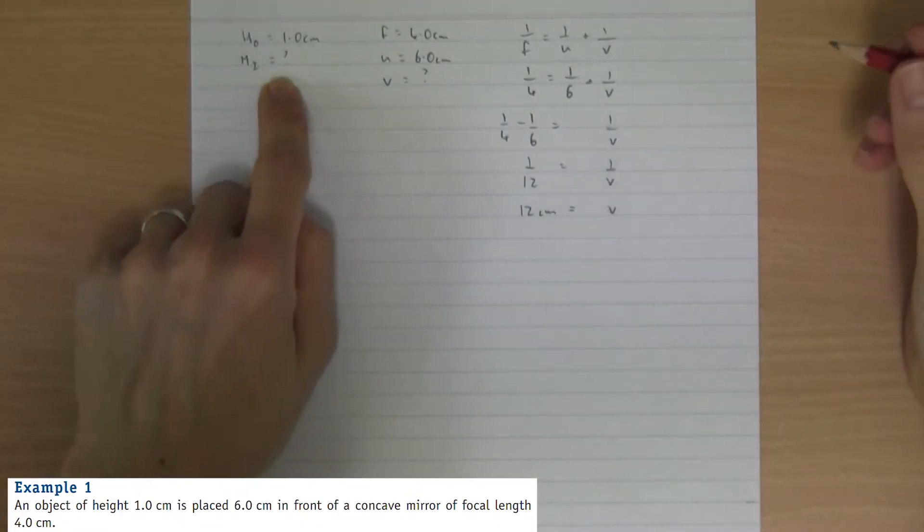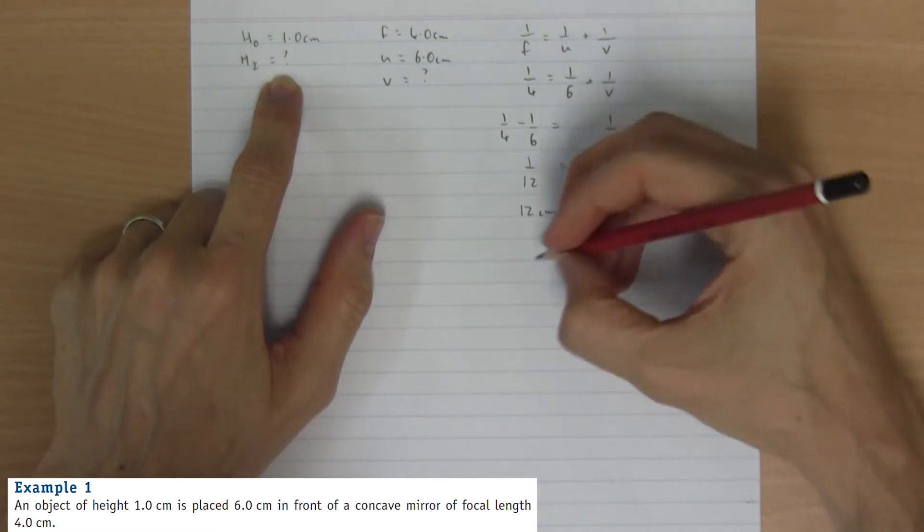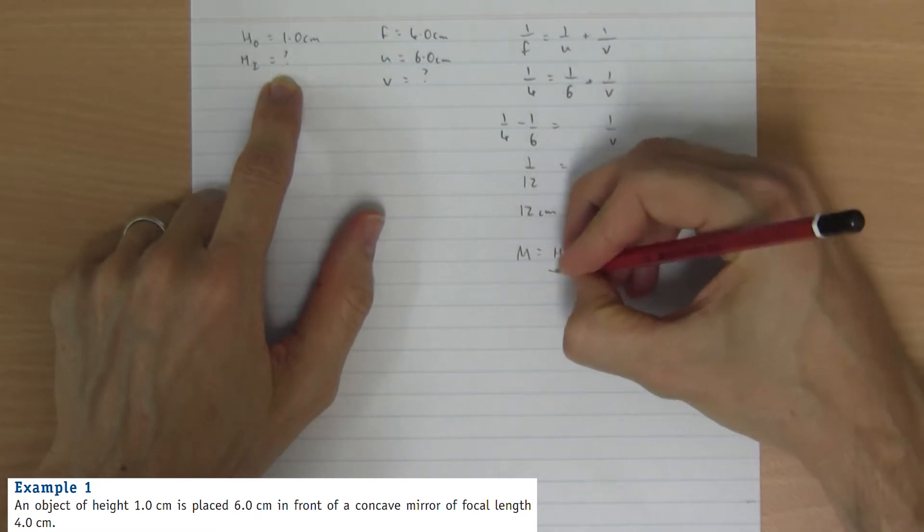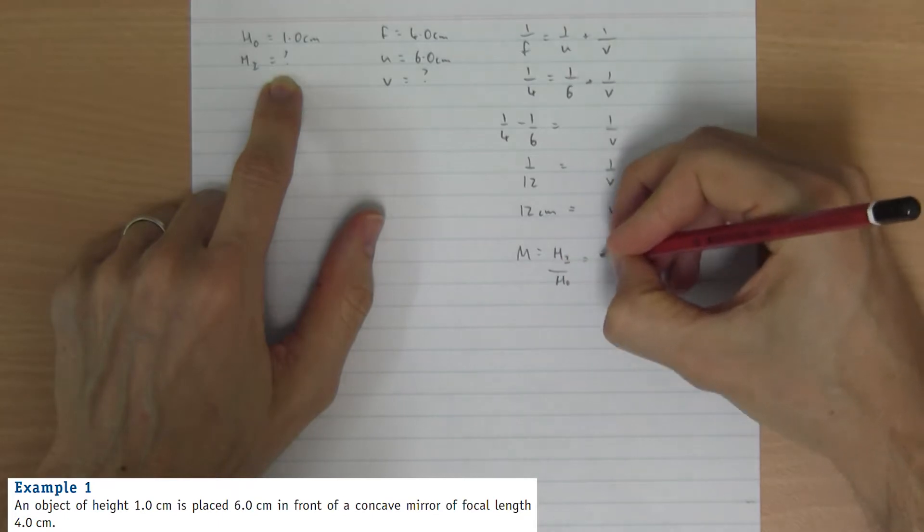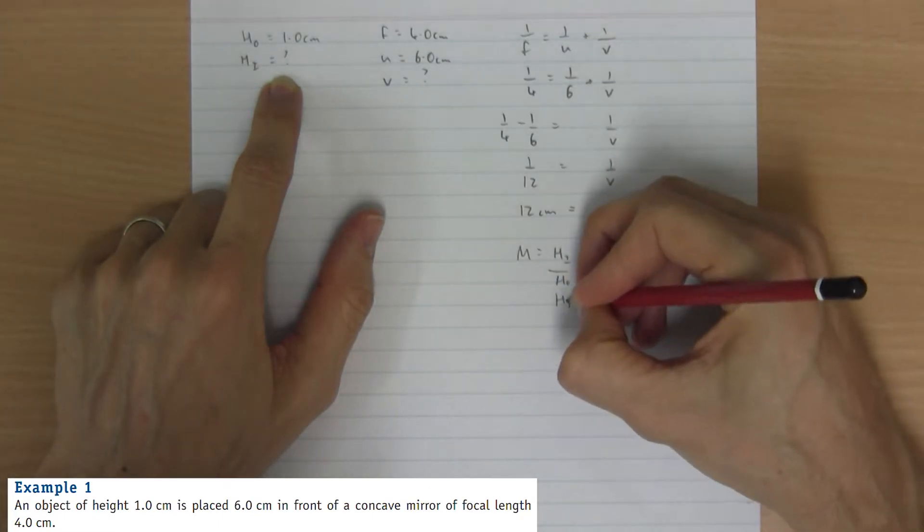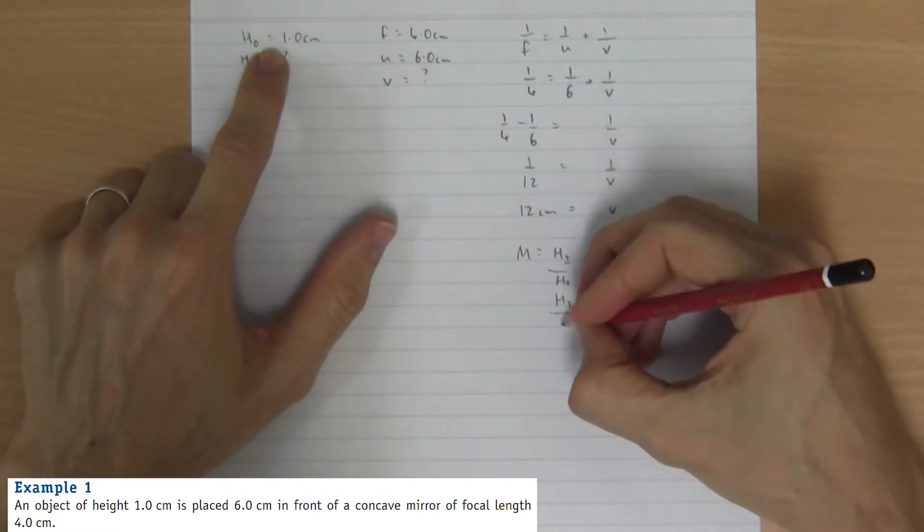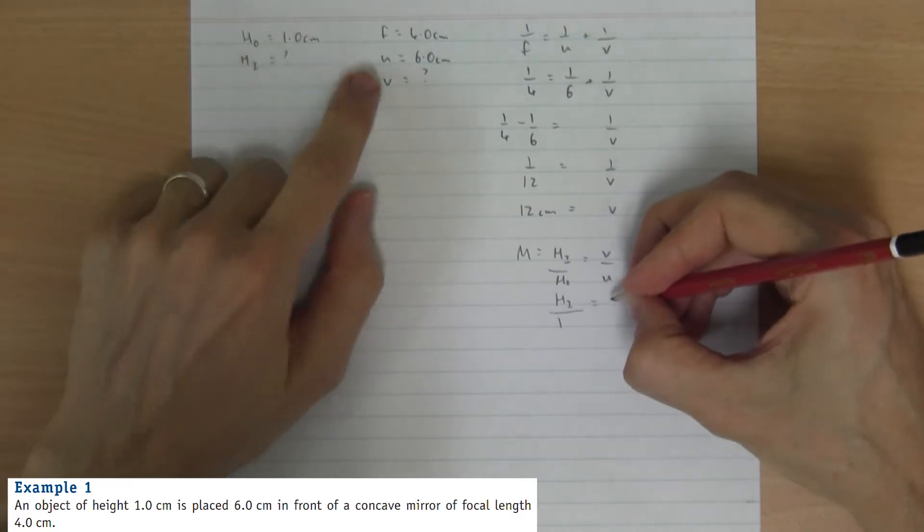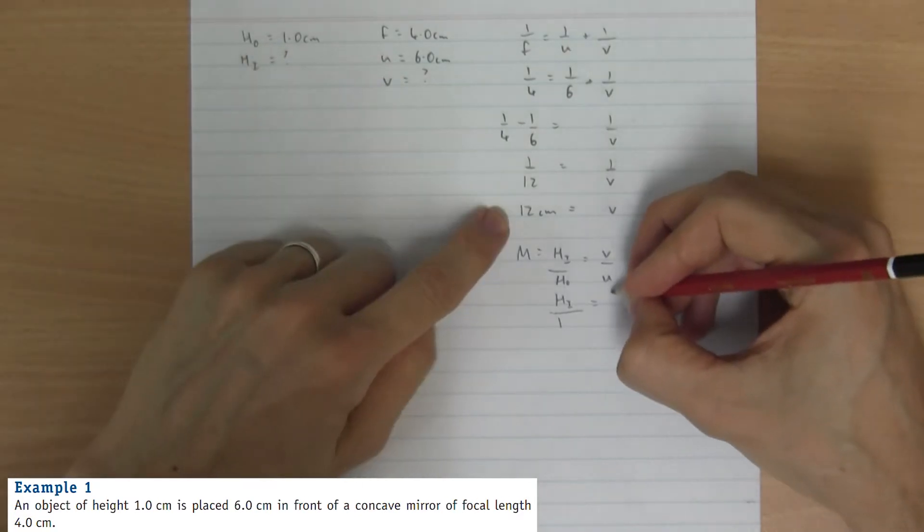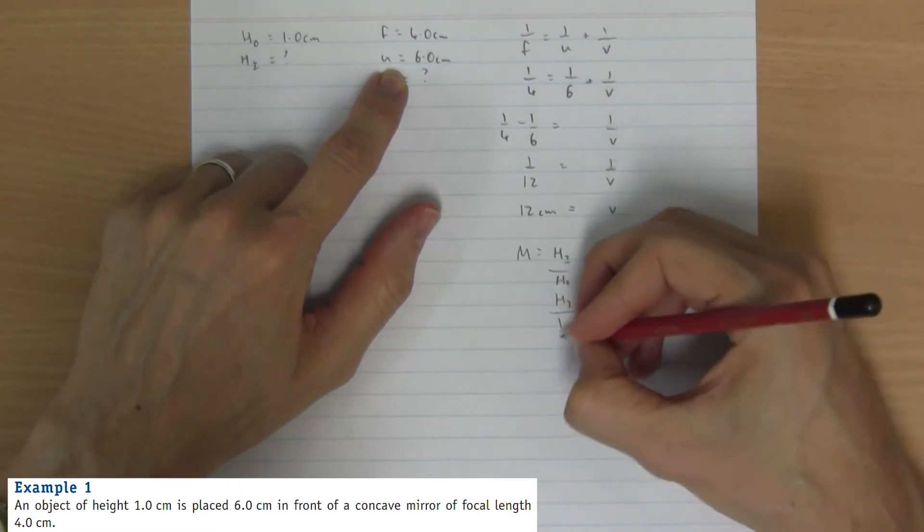How do we work out the height of the image? We use the magnification formula. The magnification is the height of the image over the height of the object, but it's also V over U. Height of the image, I don't know. Height of the object is one, V is twelve, and U is six. So the scale factor is two, the magnification is two.